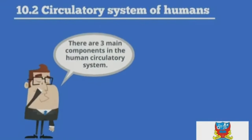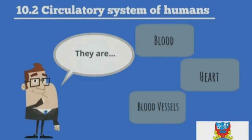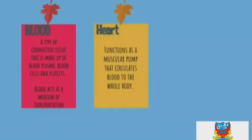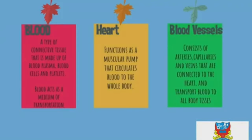There are three main components in the human circulatory system: blood, heart, and blood vessels. Blood is a type of connective tissue made up of blood plasma, blood cells, and platelets, and it acts as a medium of transportation. The heart functions as a muscular pump that circulates blood to the whole body. Blood vessels consist of arteries, capillaries, and veins connected to the heart, transporting blood to all body tissues.